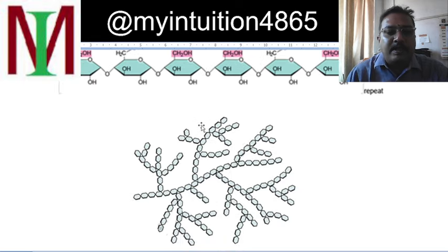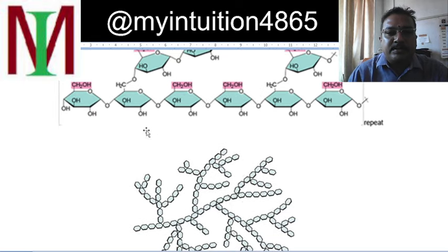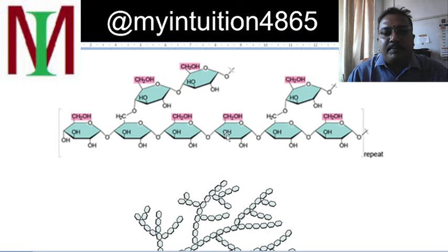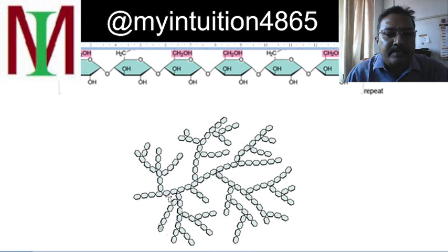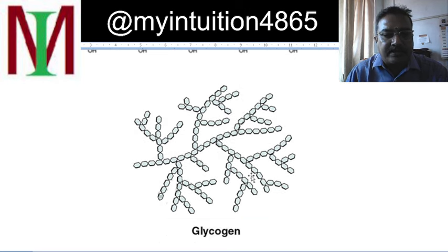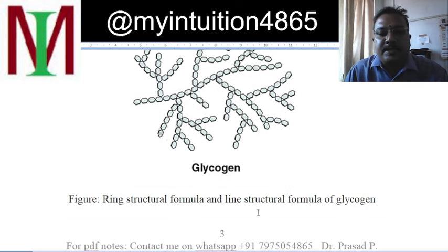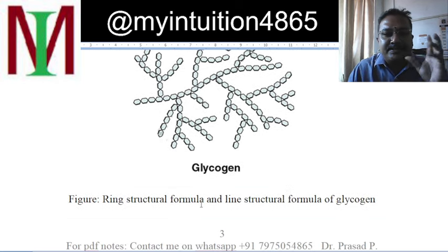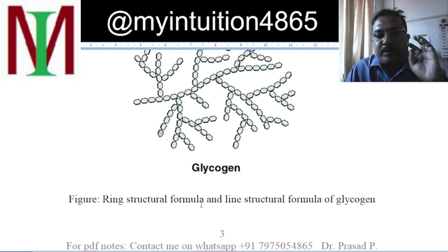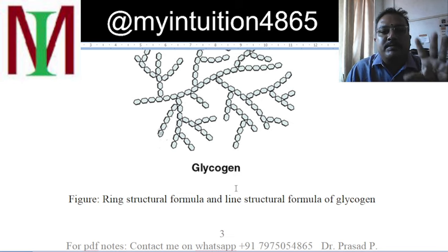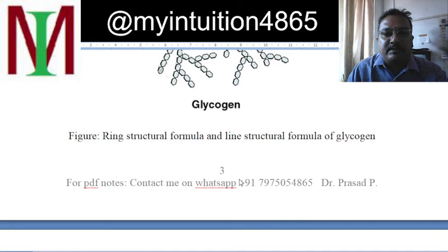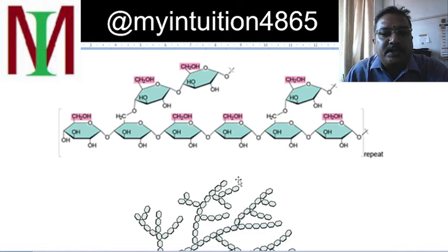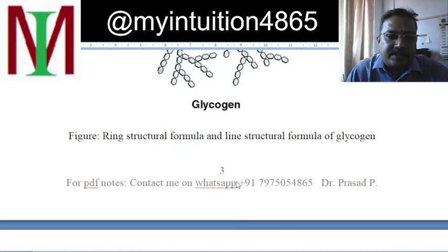We also have glycogen. Glycogen has a tree-like structure — not as cross-linked as cellulose, but a branching tree-like arrangement shown in the line structure. We call it glycogen. You can imagine the difference between glycogen, starch, and cellulose fiber, because we cannot see them with the naked eye.